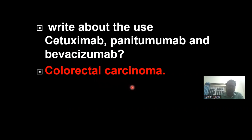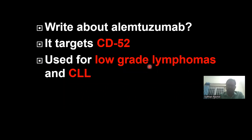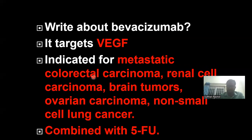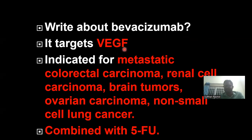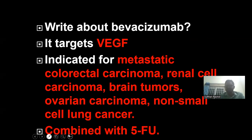So these three drugs are used in colorectal carcinoma. Bevacizumab — the 'B' in our mnemonic — targets VEGF, vascular endothelial growth factor. It also has other uses: it is used in renal cell carcinoma, brain tumors, ovarian cancers, and non-small cell lung cancer. This drug is usually combined with 5-FU, 5-fluorouracil.